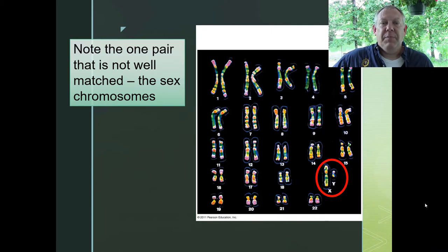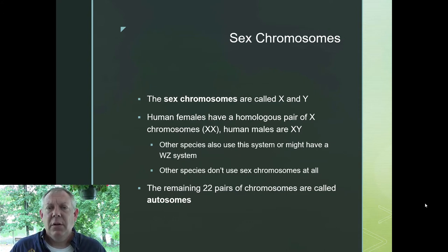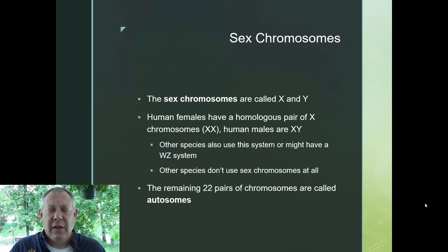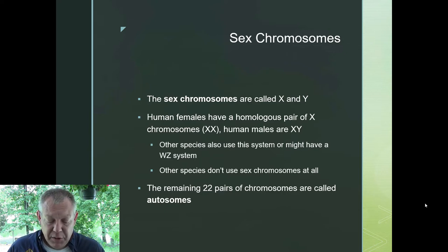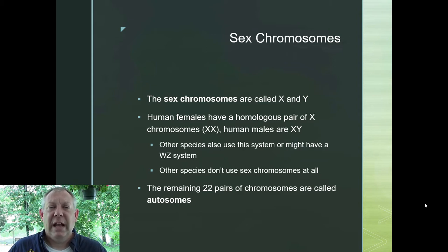Looking at the human karyotype, you've got one pair that's not well matched — they're different sizes. That's the sex chromosome. The sex chromosomes are called X and Y. A biological female will have two X's; a biological male will have one X and one Y. But this is not the only system in animals. Some animals have what's known as a WZ system, where males have two W chromosomes — that's the homogametic sex, having two of the same sex chromosome — whereas a WZ animal would be a female, the heterogametic sex.